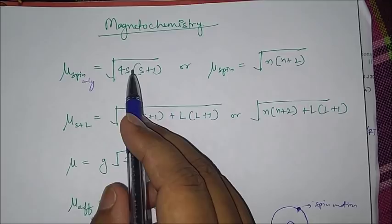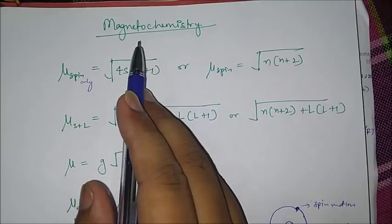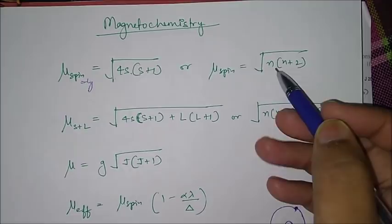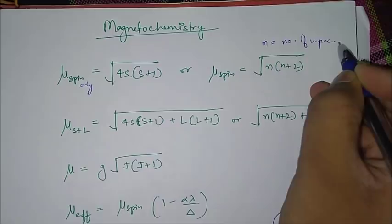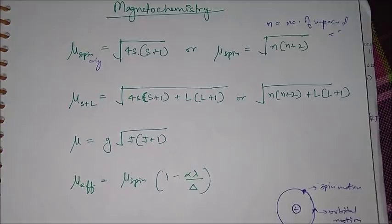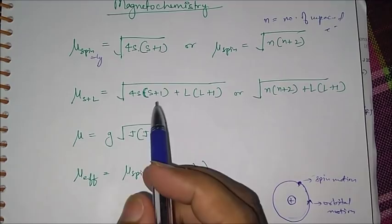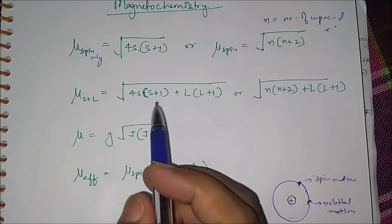The first formula is the spin-only magnetic moment: µ_spin = √(4S(S+1)), where S is the spin quantum number. For one unpaired electron S = 1/2, for two unpaired electrons S = 1, and so on. Alternatively, you can use µ_spin = √(n(n+2)), where n is the number of unpaired electrons.